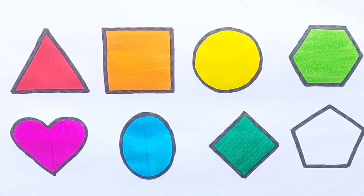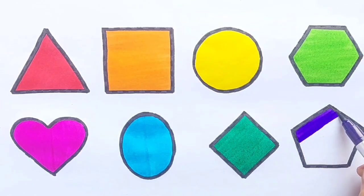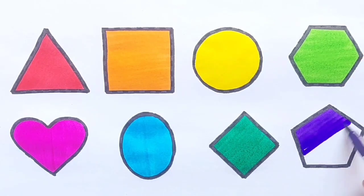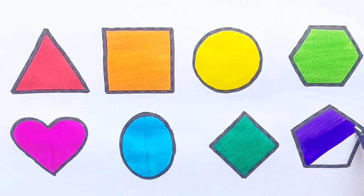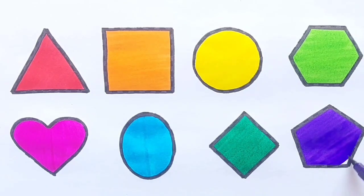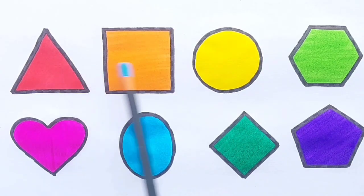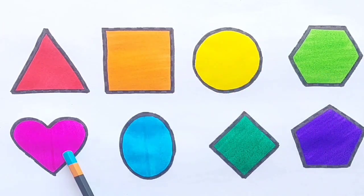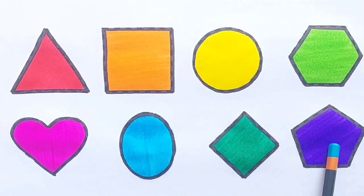Green Diamond Purple Color. Let's revise: Triangle, Square, Circle, Hexagon, Heart, Oval, Diamond, Pentagon.